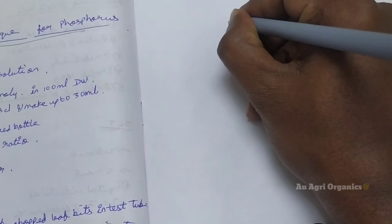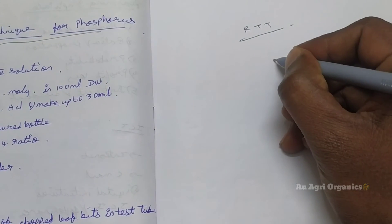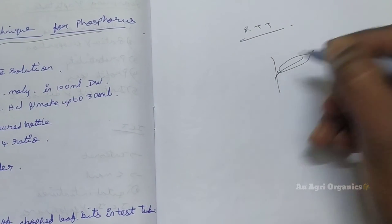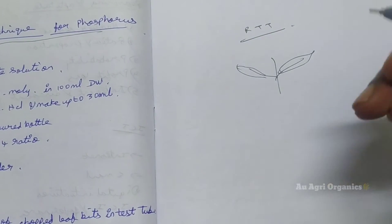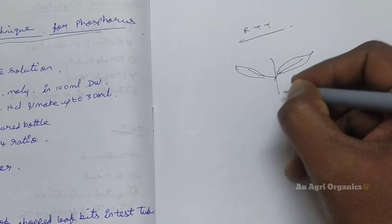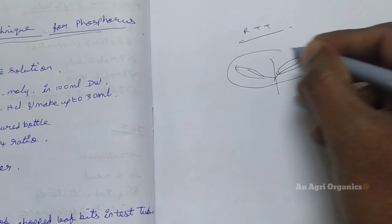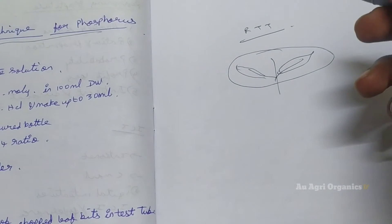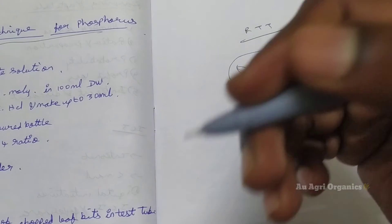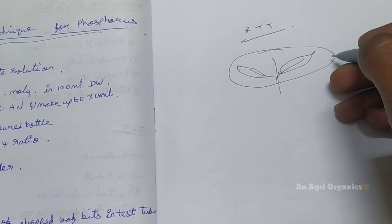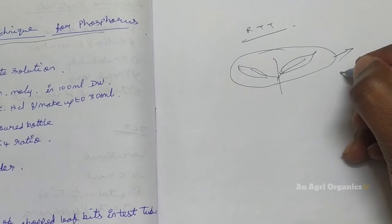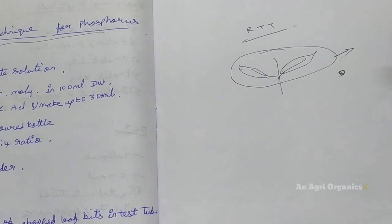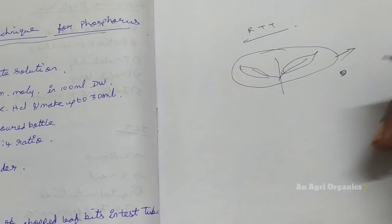First, we will see what is meant by Rapid Tissue Test. Rapid Tissue Test means, for example, you have grown a plant and started crop cultivation, but the plants are showing some deficiency symptom. During that time, instead of soil analysis, you can go for the analysis of this plant tissue — you can immediately collect the plant tissue and go for analysis within some time. For this, you need only one or two chemicals, and that is the benefit of this Rapid Tissue technique.